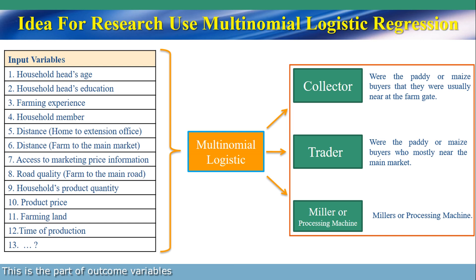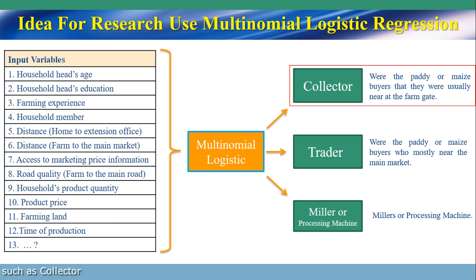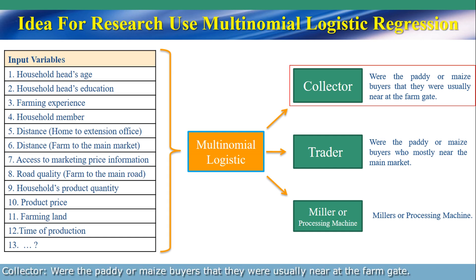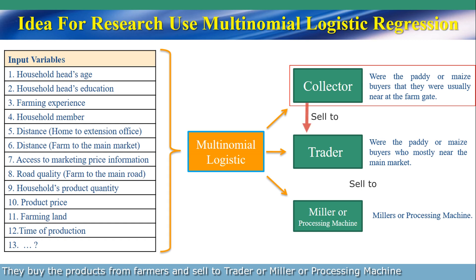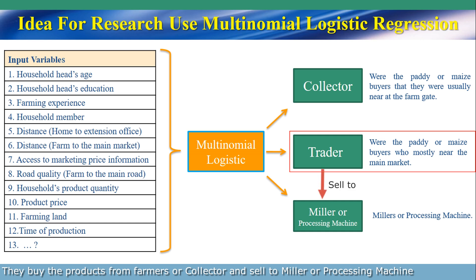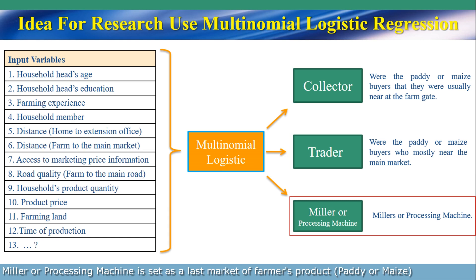This is the part of outcome variables, such as collector, trader, and miller or processing machine. The trader is the petty or mass buyer who is mostly near the main market. They buy the product from the farmer or collector and sell to the miller or processing machine. The miller or processing machine is set as a large market for farmer products.